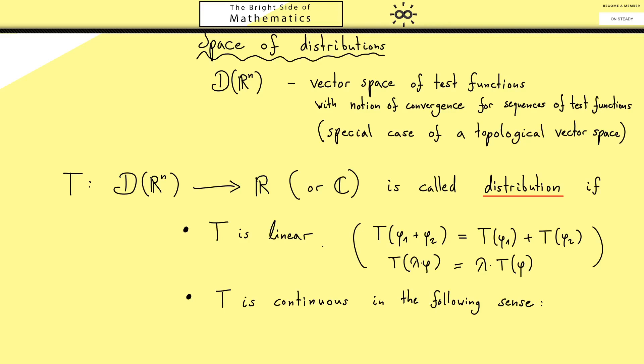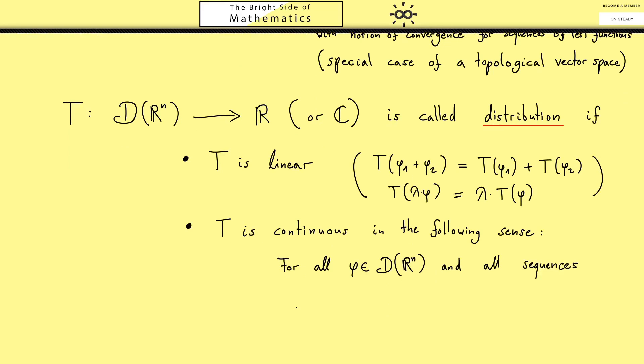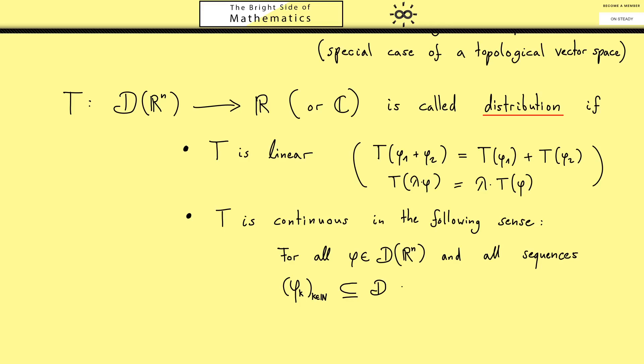Maybe you are very familiar with that. What we want is that for all test functions we can choose here, and for all sequences that converge to this test function, we also know that the images under T also converge. More precisely, we have a phi and then we look at all sequences phi_k as a subset of the test functions D again. And we say that this sequence converges with our notion of convergence in D to the function phi. Well these are the assumptions we want to put in. And what should come out is that the sequences given by T(phi_k) also converge, and they converge to T(phi).